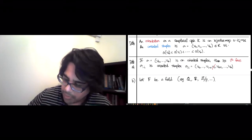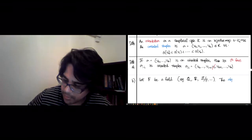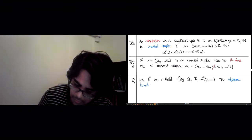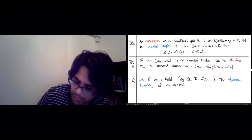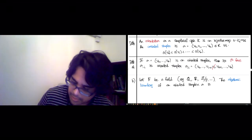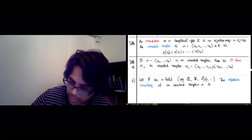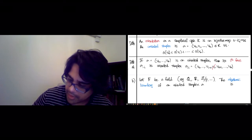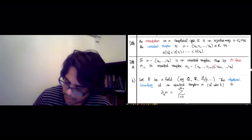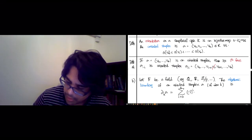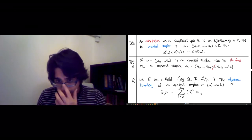The boundary, the algebraic boundary of an oriented simplex sigma is, let's say sigma has dimension k. So we'll write this like this. Boundary k sigma is the sum where i goes from 0 to k. Remember k, little k is the dimension of sigma. Of minus 1 to the i sigma minus i.